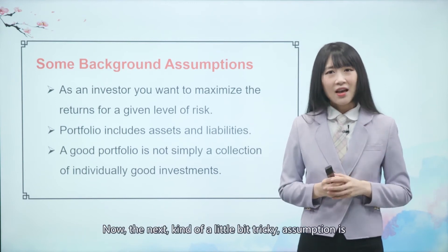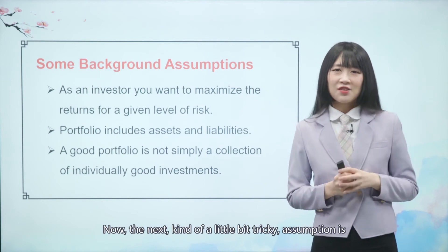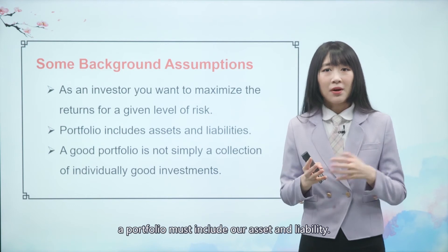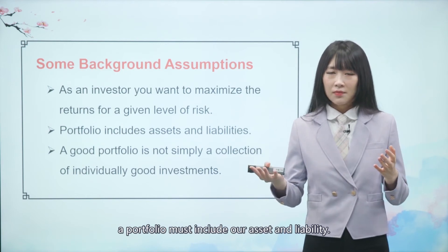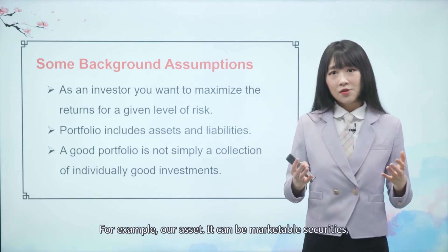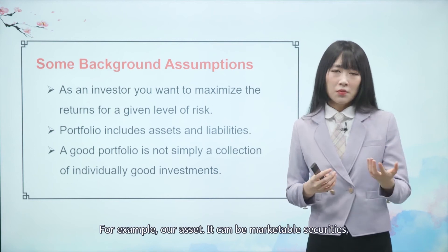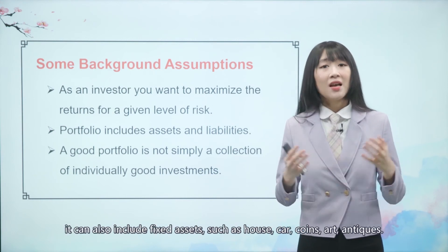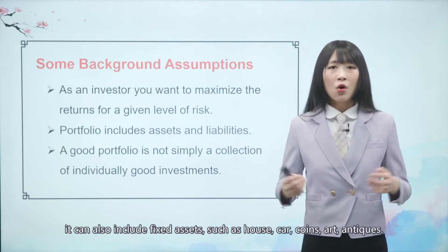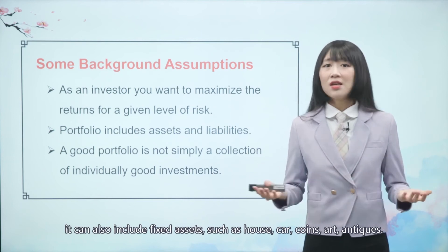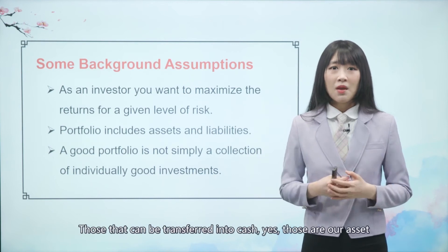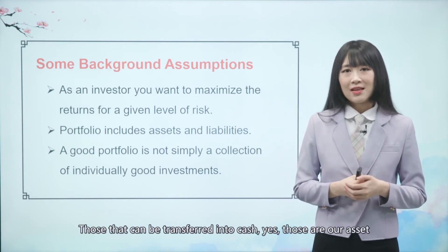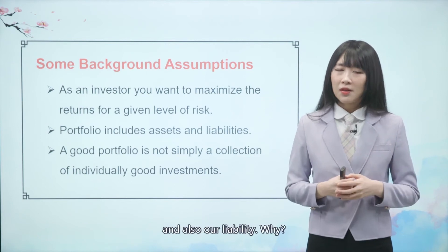The next assumption is that a portfolio must include both our assets and liabilities. Our assets can be marketable securities, and can also include fixed assets such as a house, car, coins, or art and antiques — those that can be transferred into cash. And also our liabilities.